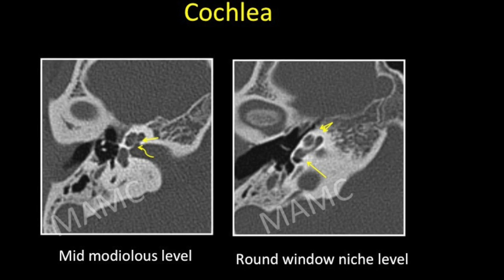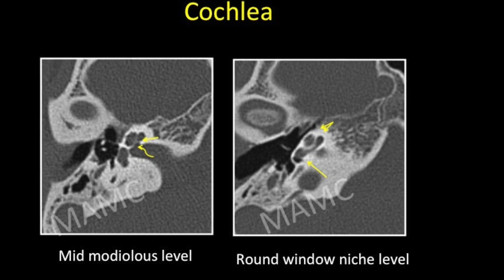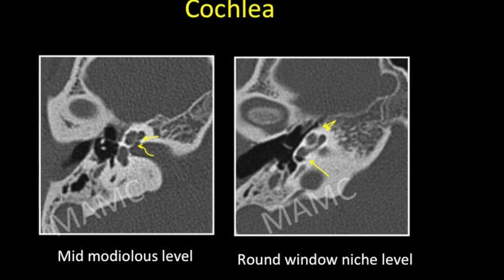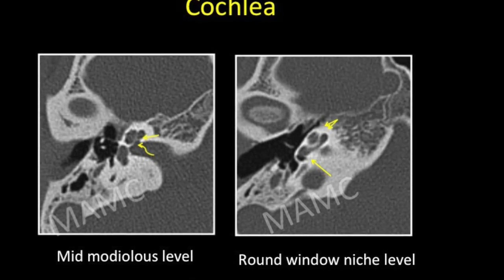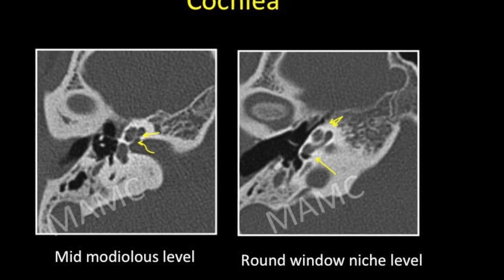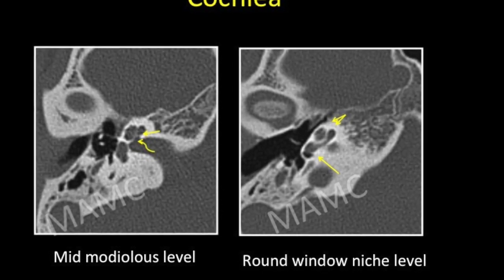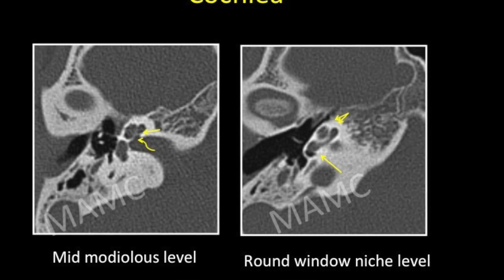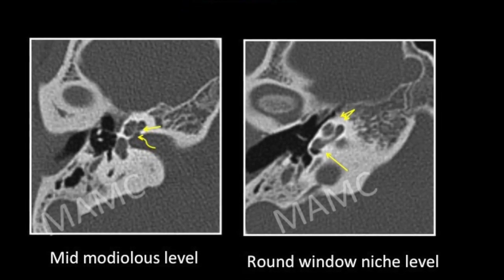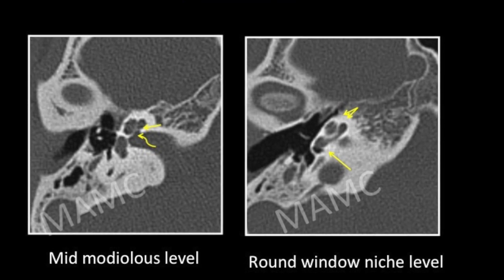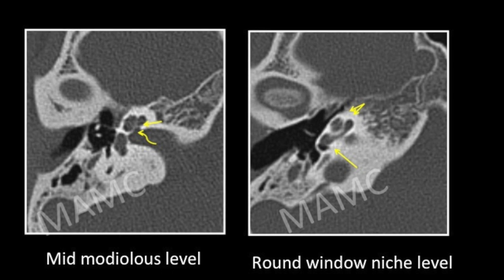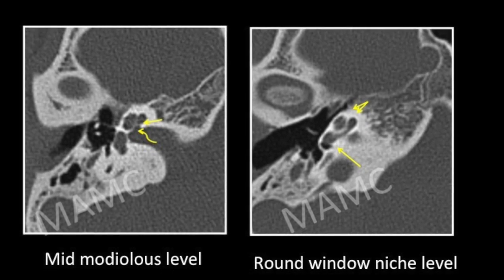Coming on to the cochlea: the cochlea is a coiled structure forming two and a half to two and three-quarter turns around a central bony axis called the modiolus. We evaluate the cochlea on two important sections. The first is the mid-modiolar level, where the modiolus is seen as the central trapezoidal bone, and the curved arrow depicts the cochlear aperture through which the cochlear nerve enters the cochlea.